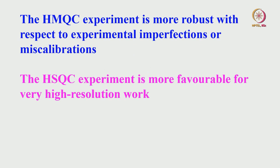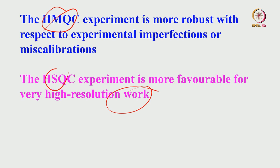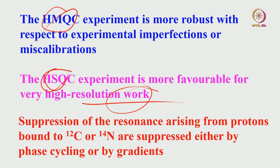A subtle point about HMQC: it is more robust with respect to experimental imperfections and miscalibration, such as slight deviations from 90° pulses. HSQC is more favorable for high-resolution work, because HMQC generally gives broader signals due to HH homonuclear coupling evolving during the experiment. There are ways to remove HH coupling, but generally HMQC gives broader signals. HSQC gives higher resolution and is more favorable for suppression of unwanted resonances.